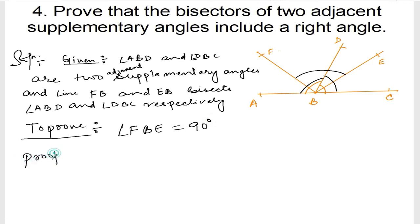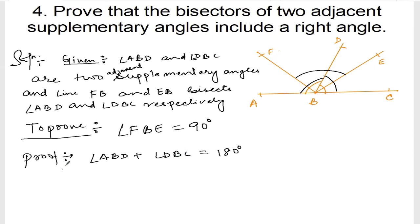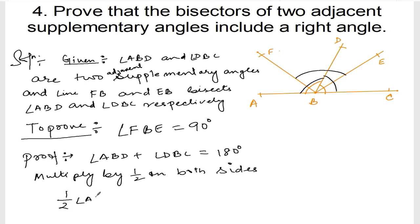Proof. We know angle ABD plus angle DBC is equal to 180 degrees, because these are two adjacent supplementary angles. Next, let me multiply by half — multiply by 1/2 on both sides. If you multiply by 1/2 on both sides, it will be: half of angle ABD plus half of angle DBC is equal to half of 180 degrees.